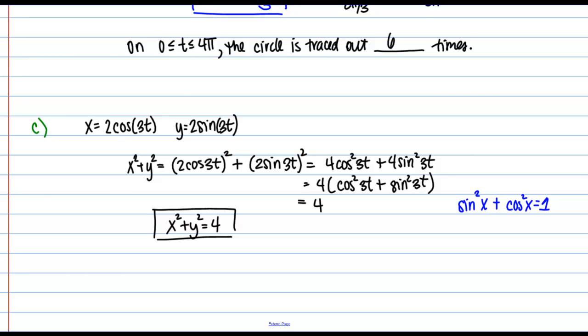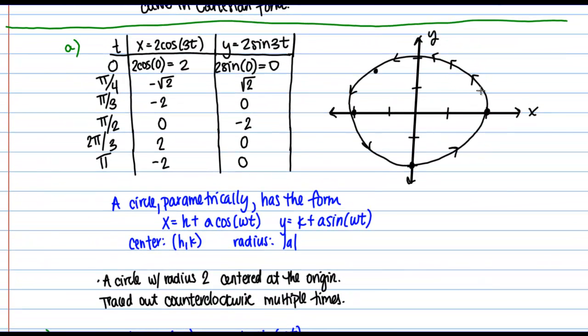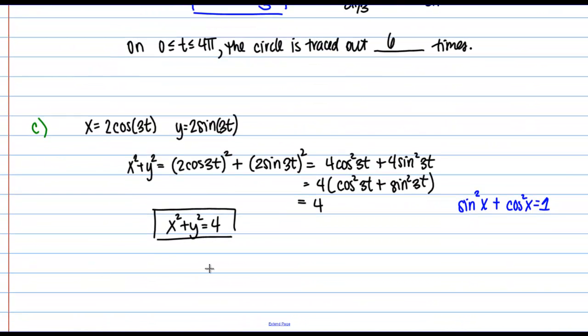Now in this particular case, we know that parametrically the entire circle was traced out. So then I don't need to include any limitations here. I'm just going to include the full circle X squared plus Y squared equals 4.